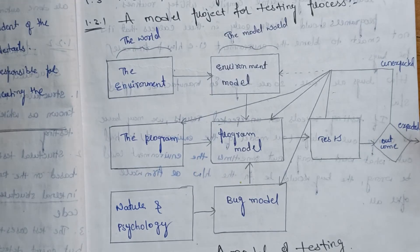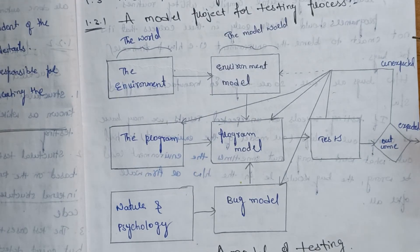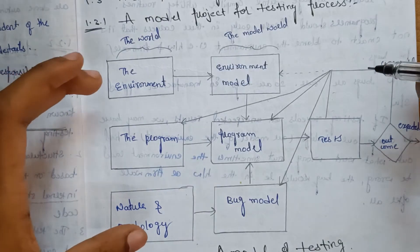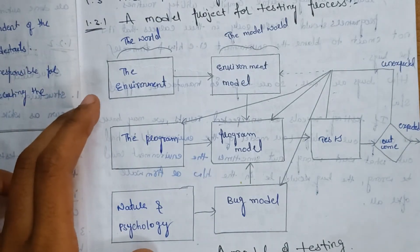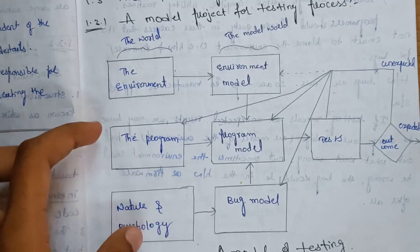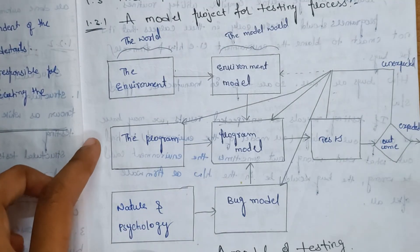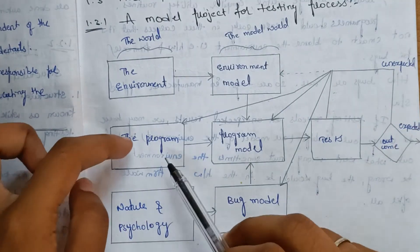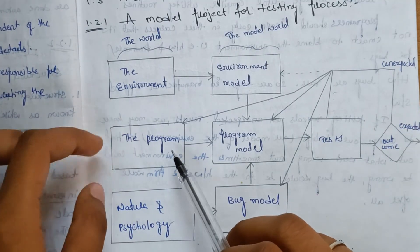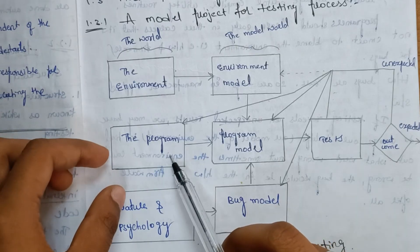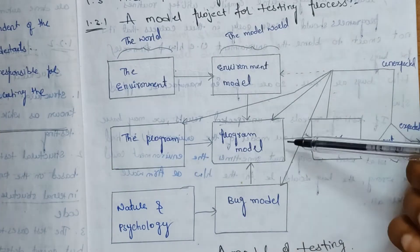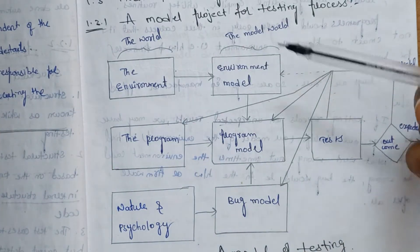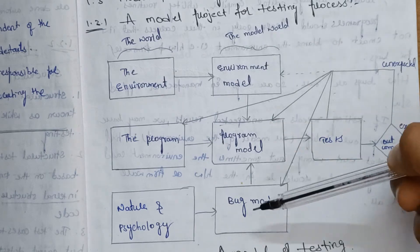If you check this model, the main process is here. In this process, your diagram is perfect. If you have a bug, you will see the programmer model. The programming model will automatically create three models: an environment model, program model, and bug model.